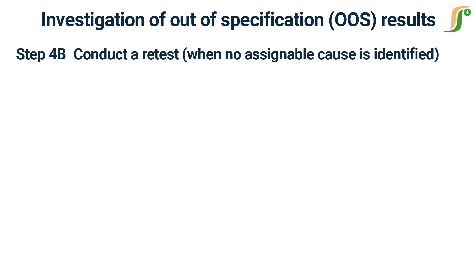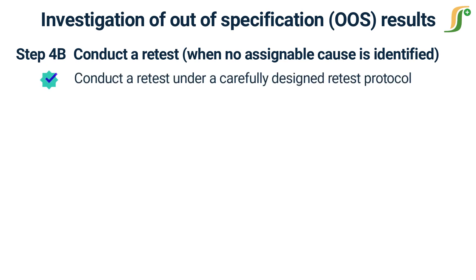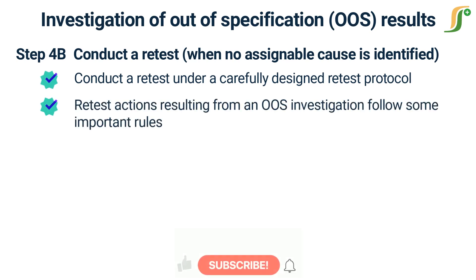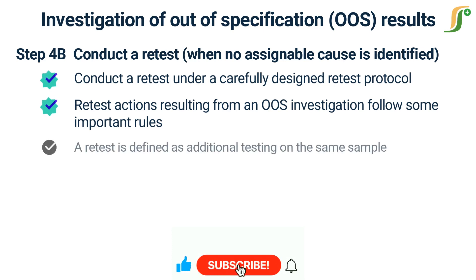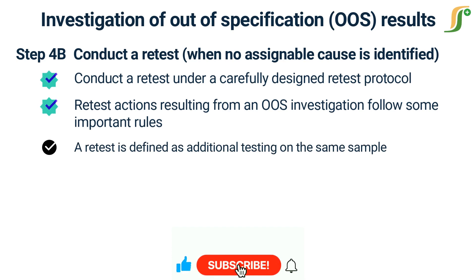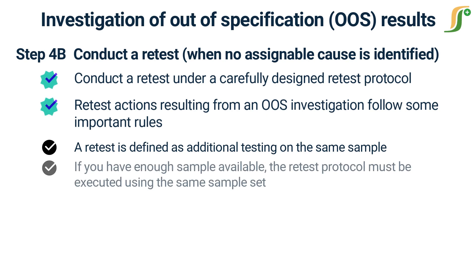Step 4b: Conduct a retest when no assignable cause is identified. You should conduct a retest under a carefully designed retest protocol based on the specific problem identified. The history of the product, method, and batch must delineate the number of retests to be performed. A retest is defined as additional testing on the same sample, from the same bottle of tablets or capsules in the same drum or mixer. Retesting is acceptable only after the investigation has commenced and only if retesting is appropriate to investigate the OOS event. If you have enough sample available, the retest protocol must be executed using the same sample set that was the source of the original out-of-specification result.